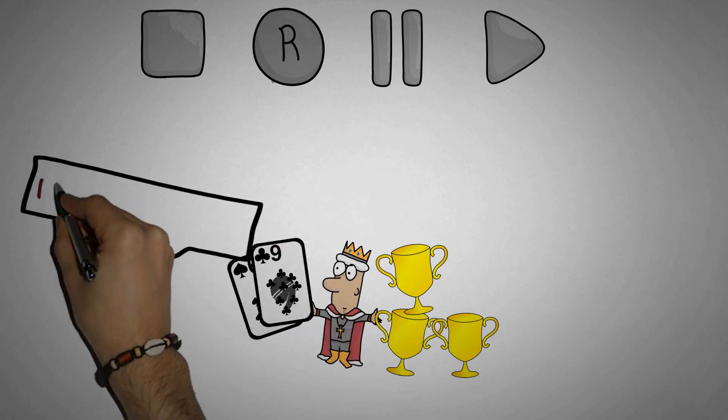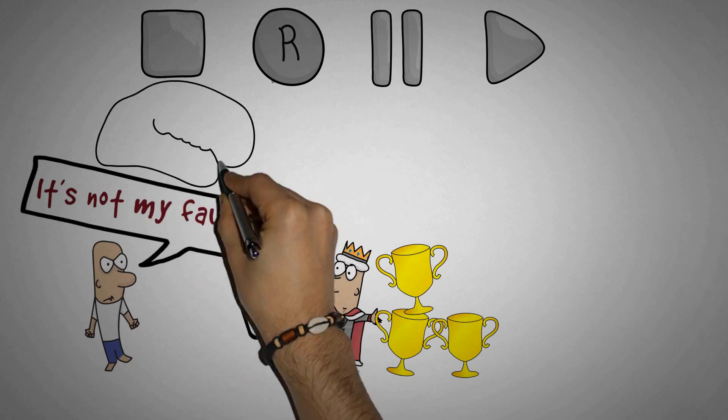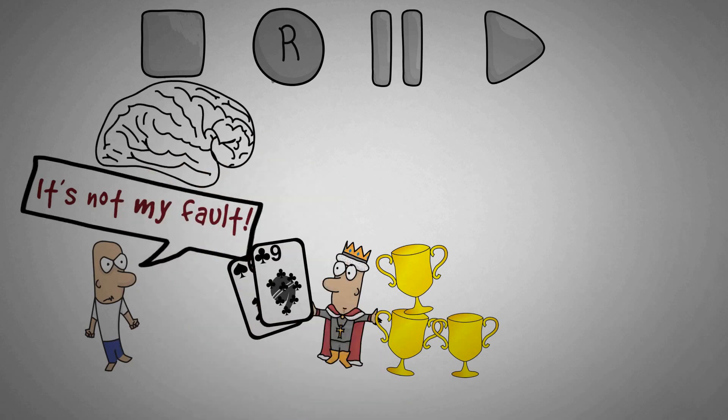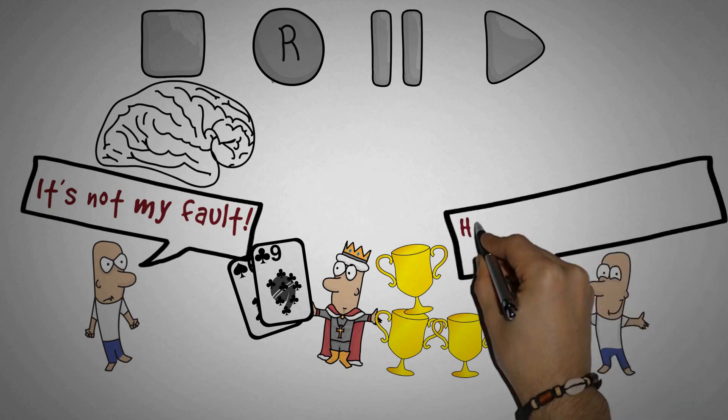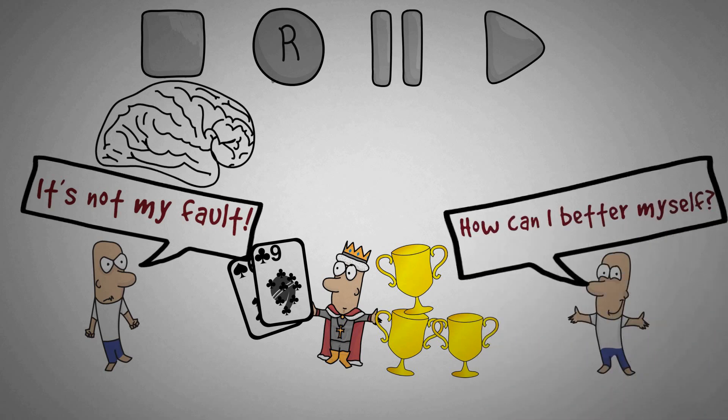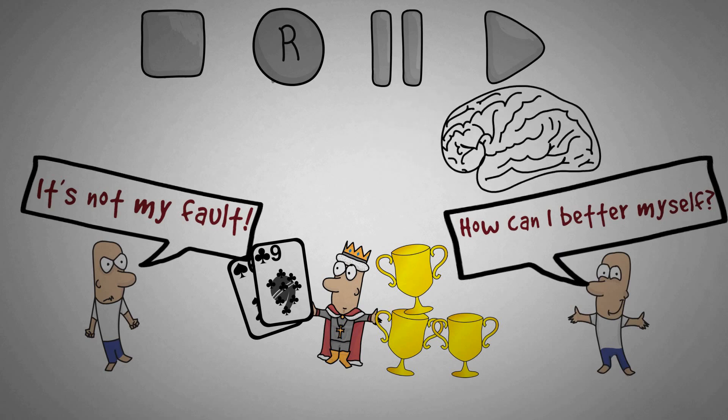If you blame something external like a reactive person, your mind stops looking any further because it already has an answer, even if it's wrong. If a proactive person asks himself, 'How can I better myself next time?' the mind starts working and finds endless answers.